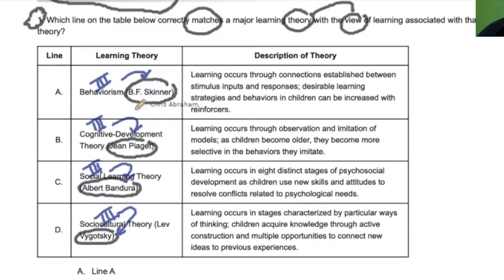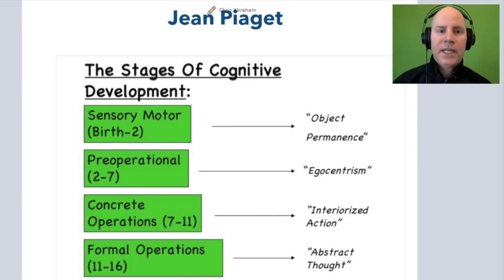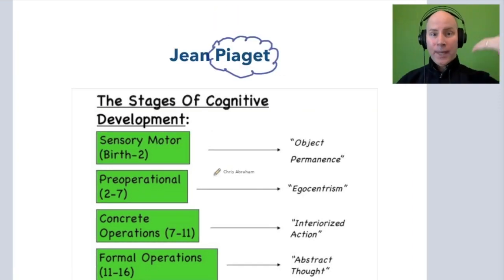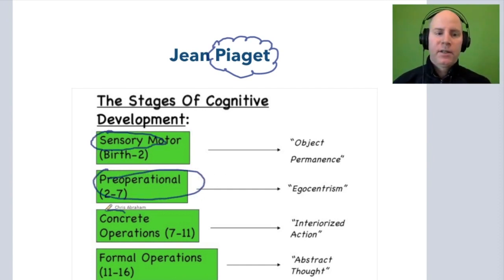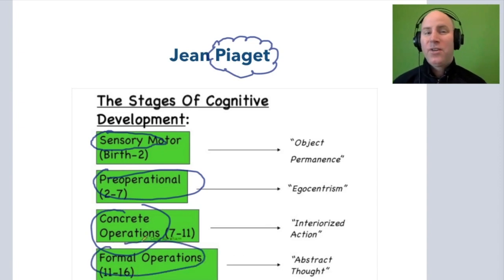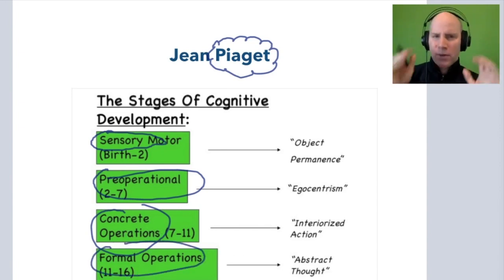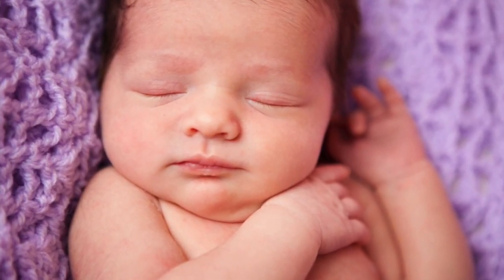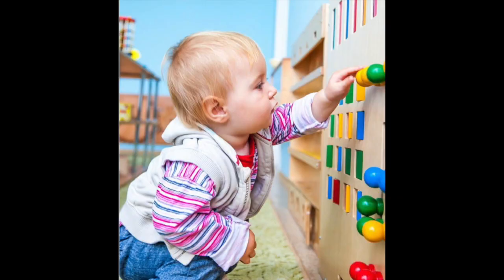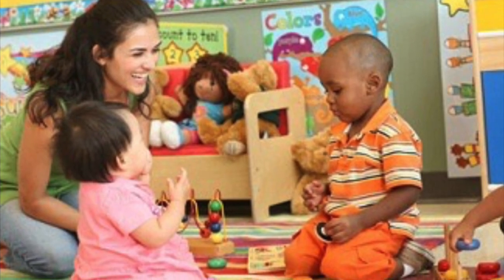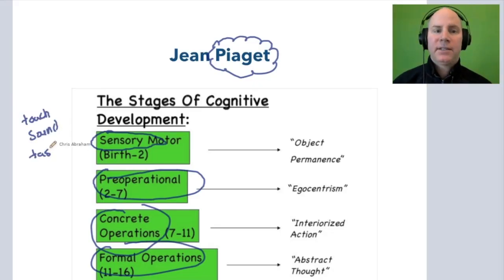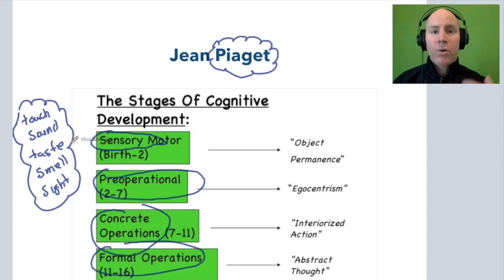Let's review some of these. Let's start with Piaget first. We think of Piaget — hopefully you remember — he had those stages: the sensory motor stage, the pre-operational stage, the concrete operational stage, the formal operational stage. That sensory motor stage is when our newborns, infants, and toddlers are taking in information through their senses — touch, sound, taste, smell, sight. They're learning about their environment through their senses and gathering important schema through this sensory motor phase.